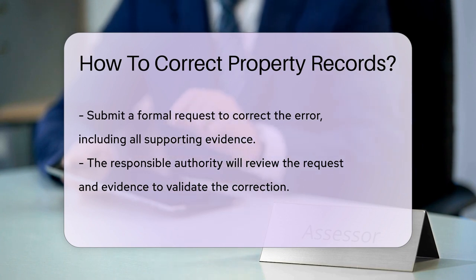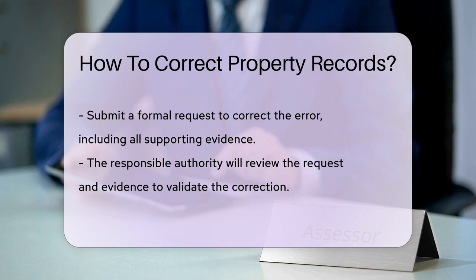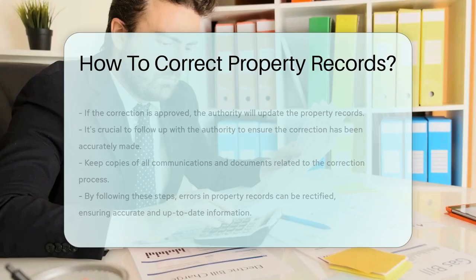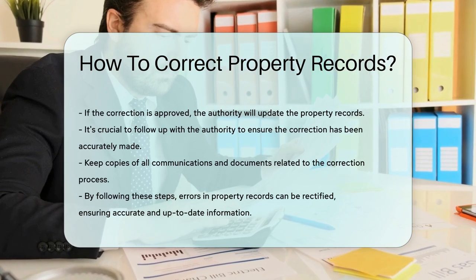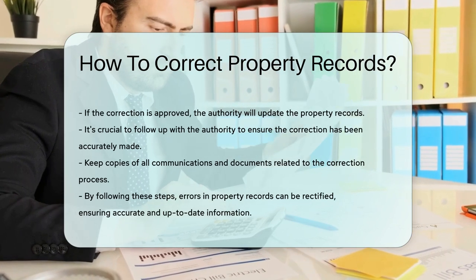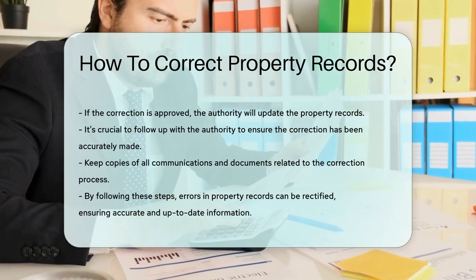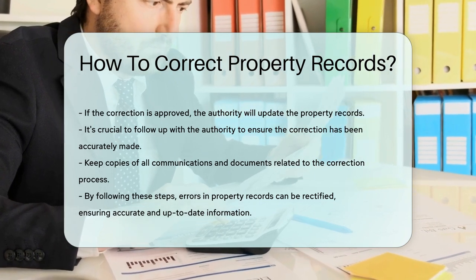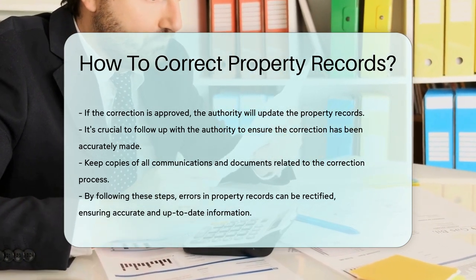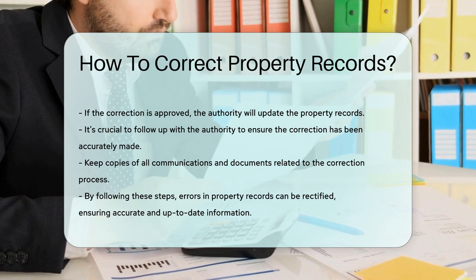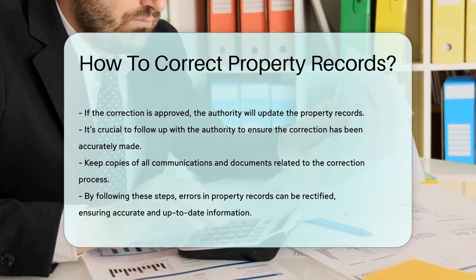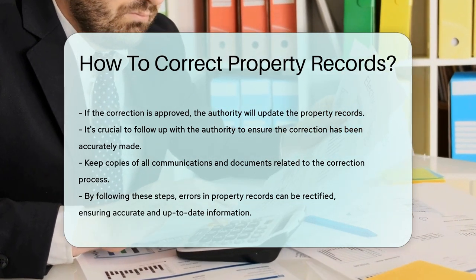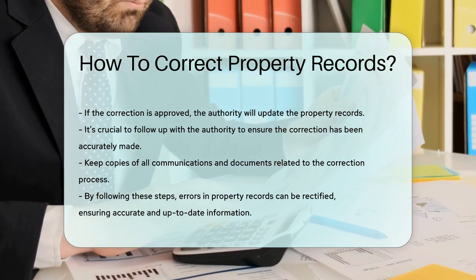If the authority approves the correction, they will update the property records accordingly. It is essential to follow up with the authority to ensure that the correction has been made accurately. Keep copies of all communications and documents related to the correction for your records. By taking these steps, you can rectify errors in property records and ensure that the information is accurate and up-to-date.